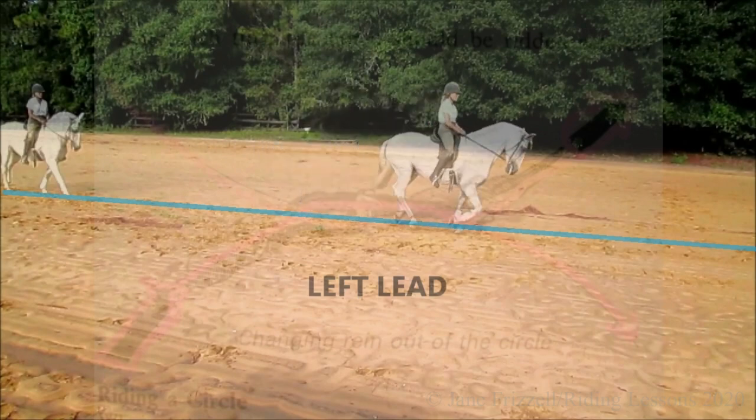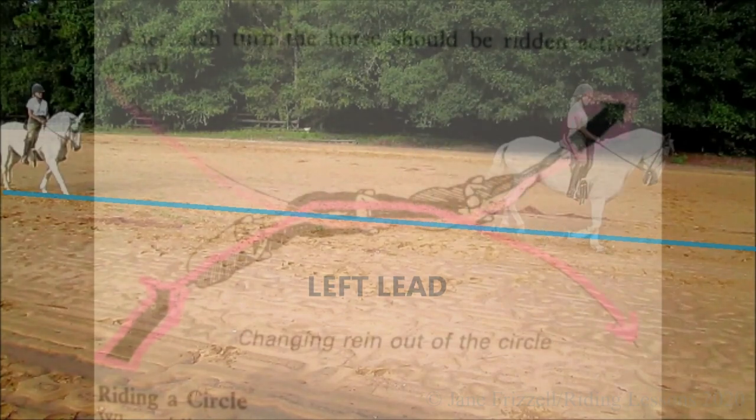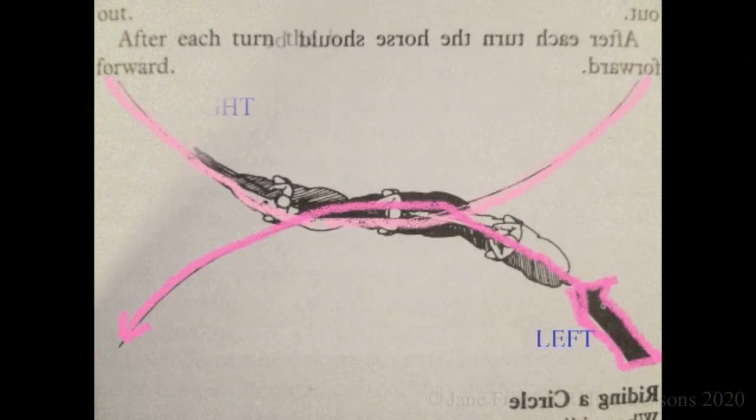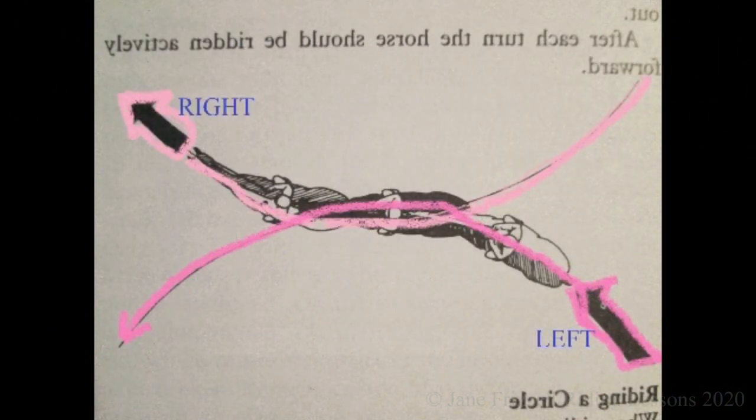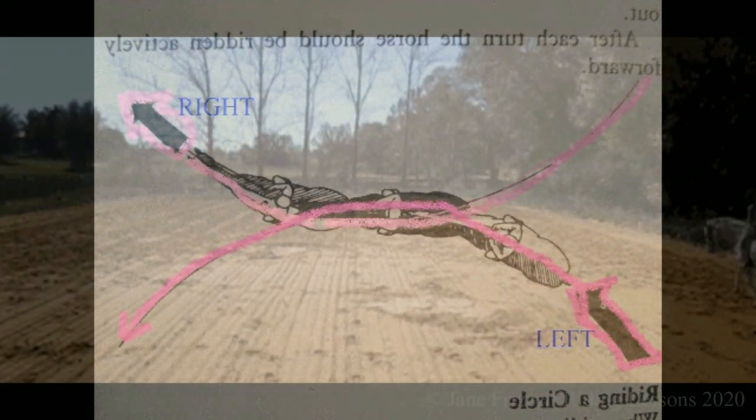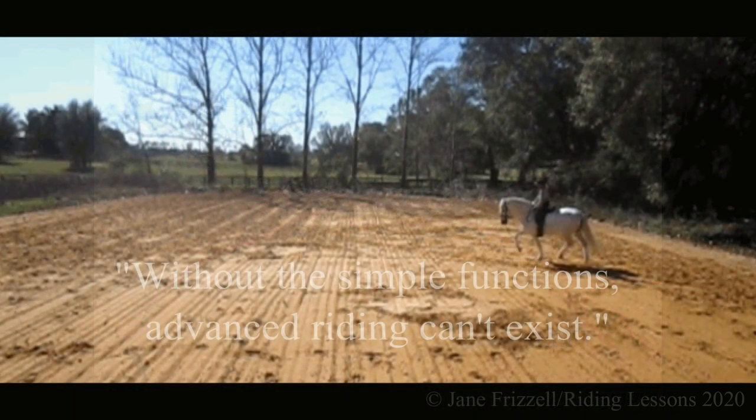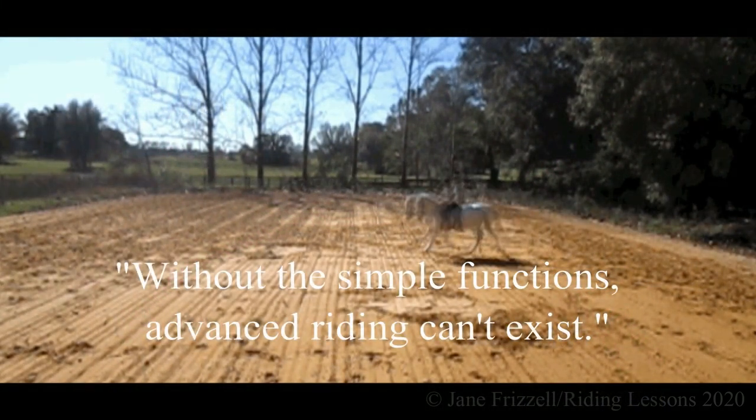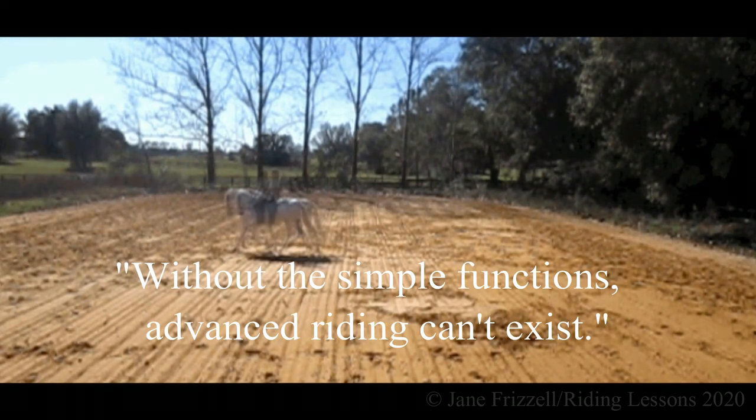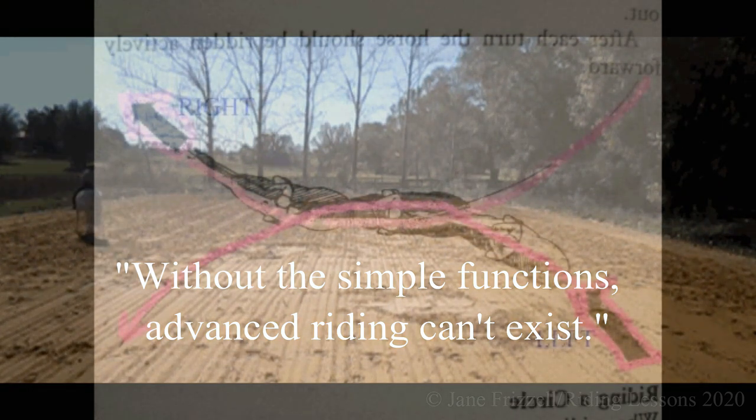These ideas begin in the plain change of rein. Without the simple functions, without these basis functions, the advanced versions can't exist. Without these simple functions—the curved line, the corner, and changes of rein—the advanced versions in riding don't exist.